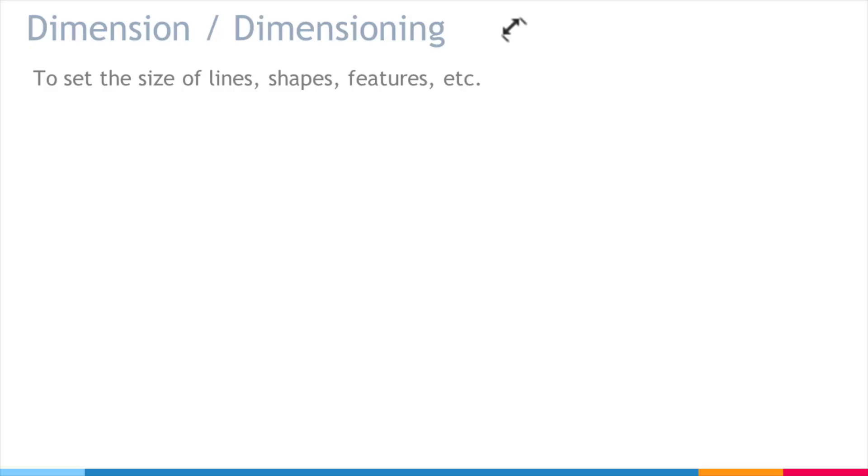So the most common type of dimension is the linear dimension, which is typically a distance, so for example the thickness or length of an object, the width of a slot, or the depth of a hole. On this slide here we have a couple examples of dimensions.